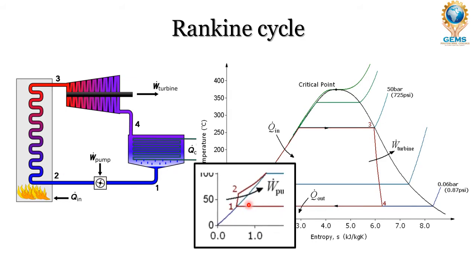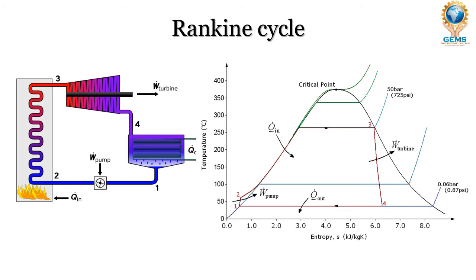In the graph, for process 1 to 2, the line is increasing. Process 2 to 3 is the boiler process where heat is added to the liquid so that the liquid becomes vapor form or the dry saturated form.